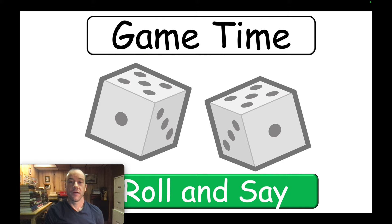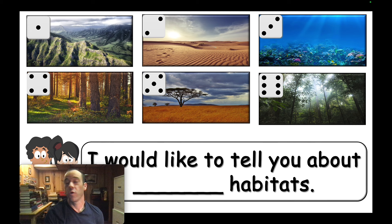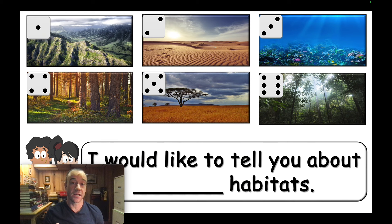The next part of the lesson requires one set of dice — or any way to get a random number from one to six, like a bag with numbers or popsicle sticks. The idea is that students do a dialogue and can't choose which habitat they'll get. For example, if they roll a two, they say 'I would like to tell you about desert habitats.' You click on that one and it takes them to the information about the desert — everything they just learned in the lesson. They should fill in the blanks themselves.